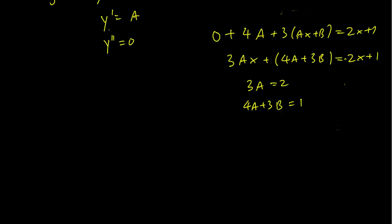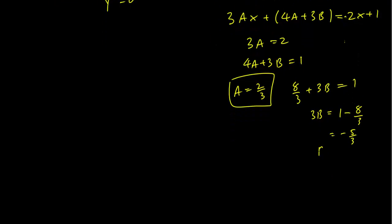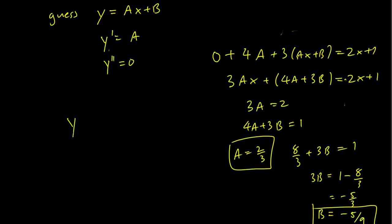So 3a equals 2 immediately implies that a equals 2 thirds. That's our first solution. Plugging that into the second equation, we have that 8 over 3 plus 3b is equal to 1. Therefore, 3b is equal to 1 minus 8 over 3, which equals negative 5 thirds. This means that b is going to be equal to negative 5 ninths, leaving us with a solution of y equals 2 thirds x minus 5 ninths.